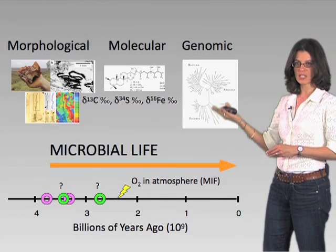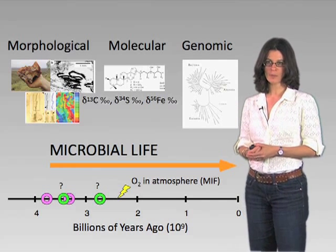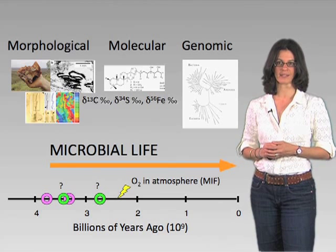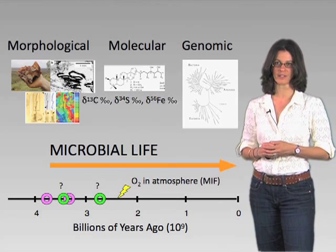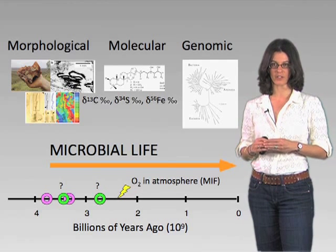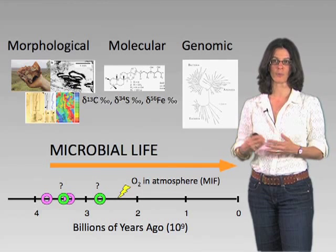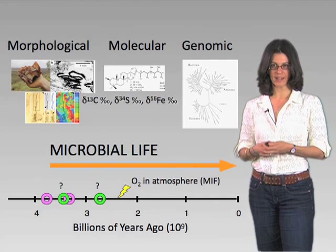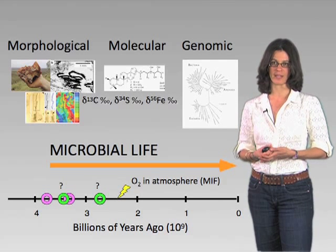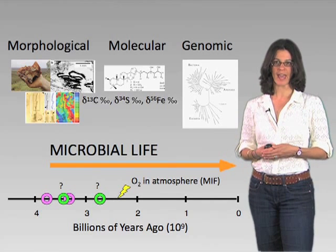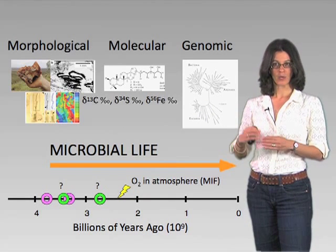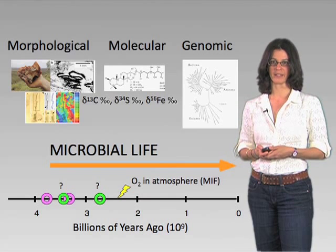Lastly, we can think of genes as fossils. The genomic record has been crucial in establishing the diversity of life on the planet, and it also helps us understand the relatedness of different enzymatic functions and how they evolved from one another. While this does not give us a concrete date when these metabolisms evolved, it does provide an ability to look at the relationship between different metabolisms and come up with an order in which they likely were invented.